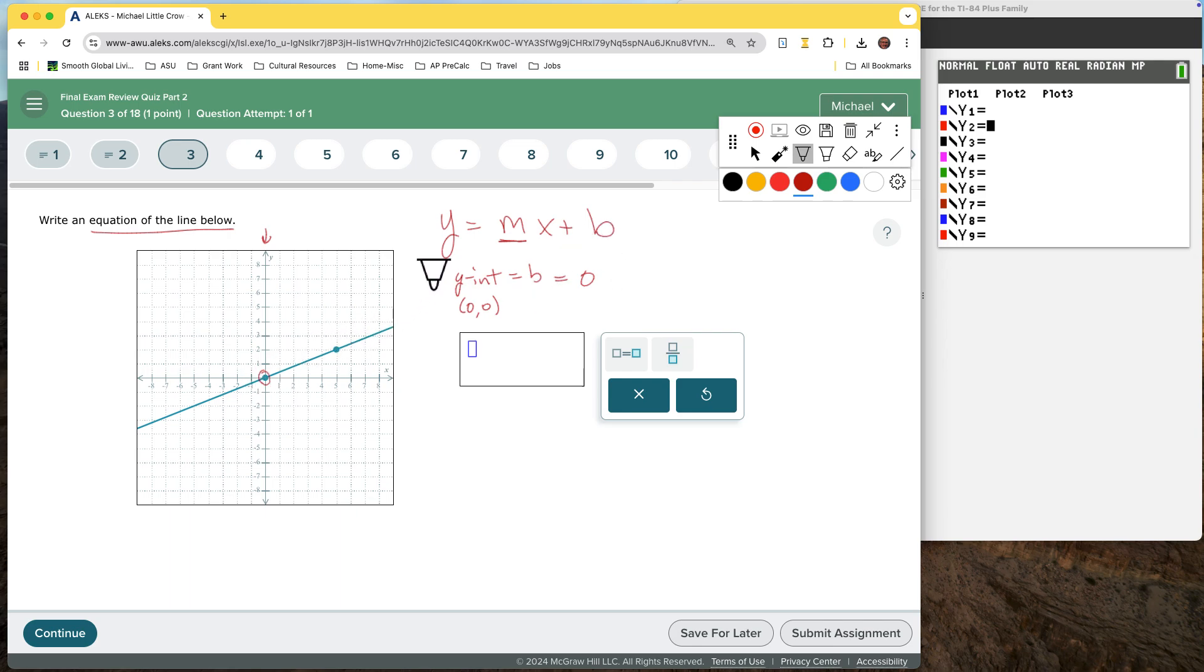The slope comes from rise over the run. So it's how far up or down. So as we say rise, but the vertical change. Vertical change over the horizontal change. Going from one point to the other, and on a line, it's always the same. It doesn't matter which two points you choose, but they've got two highlighted here for us. So we could just count going from the left point to the right point.